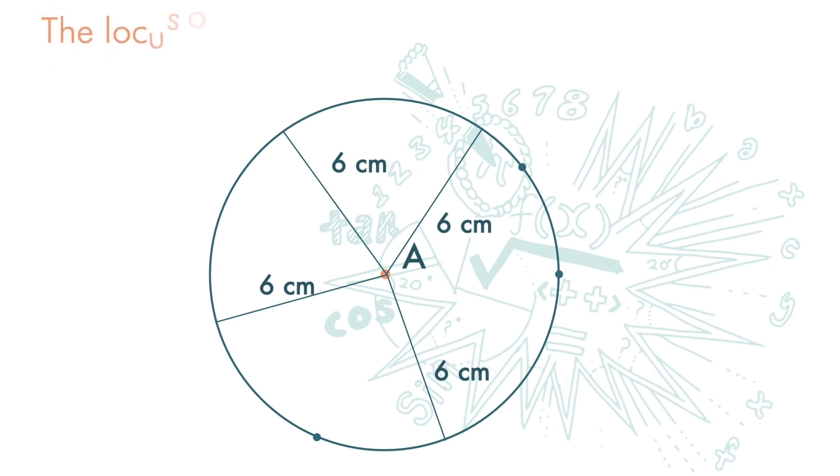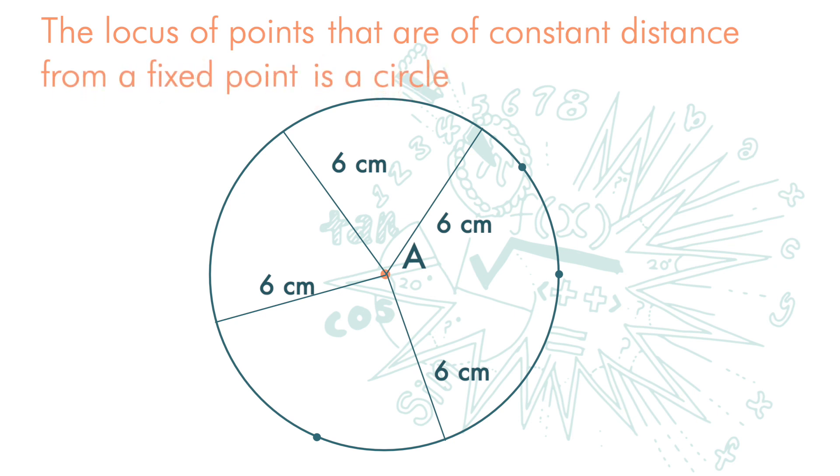So, the locus of points that are of constant distance from a fixed point is a circle, with the fixed point as its center.